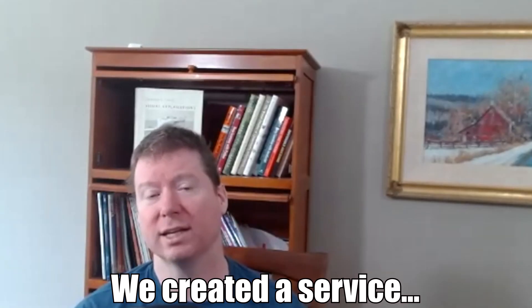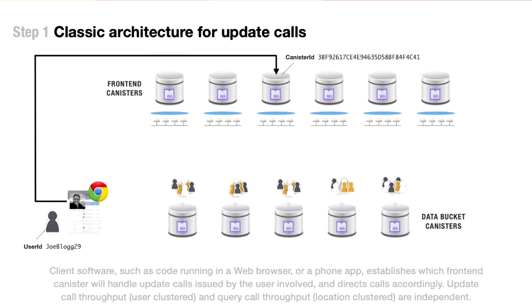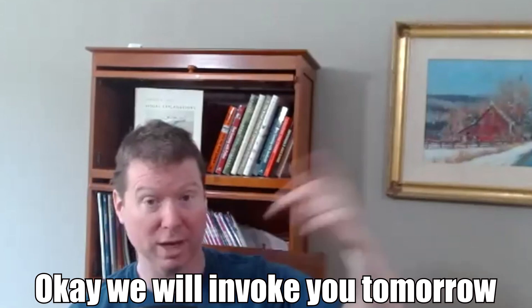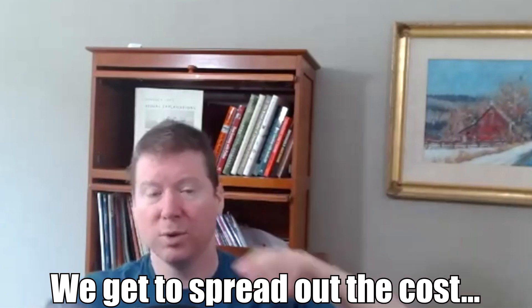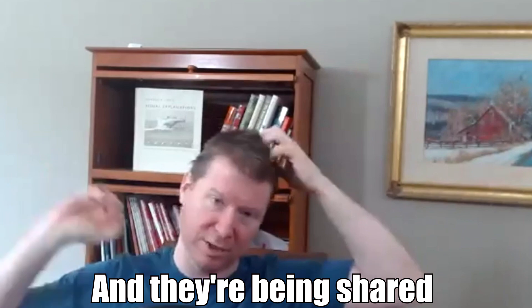So we created a service, a canister, right? So it's also decentralized, but it can be a shared resource by other canisters and smart contracts to basically say, we will invoke you at specific intervals or in specific circumstances. Like, you can say, I want you to invoke me tomorrow at 3pm. Okay, we'll invoke you tomorrow at 3pm. And by making it a shared service, we get to spread out the cost of all those transactions. And they're being shared by the consumers.